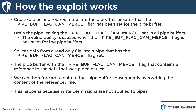An unprivileged local user could leverage this flaw to write to pages in the page cache backed by read-only files and consequently elevate their privileges, because the page cache is always writable by the kernel and writing to a pipe buffer never checks for permissions. The exploit works by: first, creating a pipe and redirecting data into it so the PIPE_BUF_FLAG_CAN_MERGE flag is set; then draining the pipe while leaving that flag set; splicing data from a read-only file into the pipe; and then writing data to the pipe buffer, overwriting the referenced file's contents.